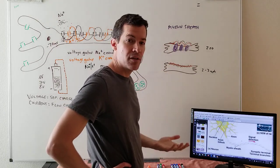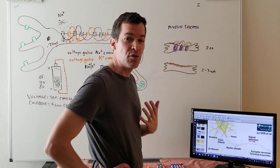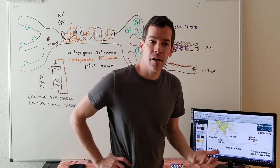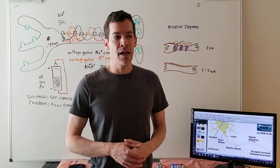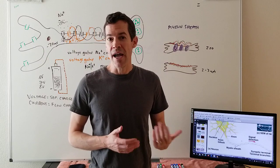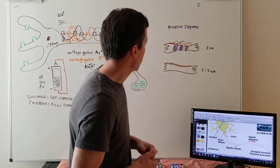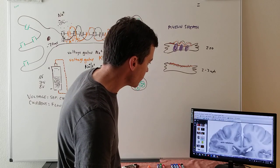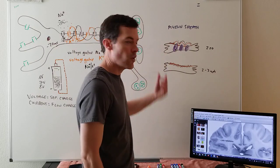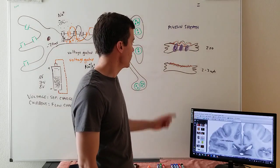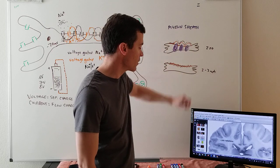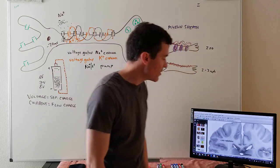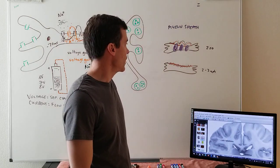Myelin sheath is mostly lipid, and lipids in animals are white — like the white fat tissue versus red muscle tissue on a steak. That connects to brain anatomy: white matter and gray matter. Nerve cells themselves are gray, but when covered with white myelin sheath they become white. The outer gray matter of the brain is unmyelinated; the inner white matter is myelinated.